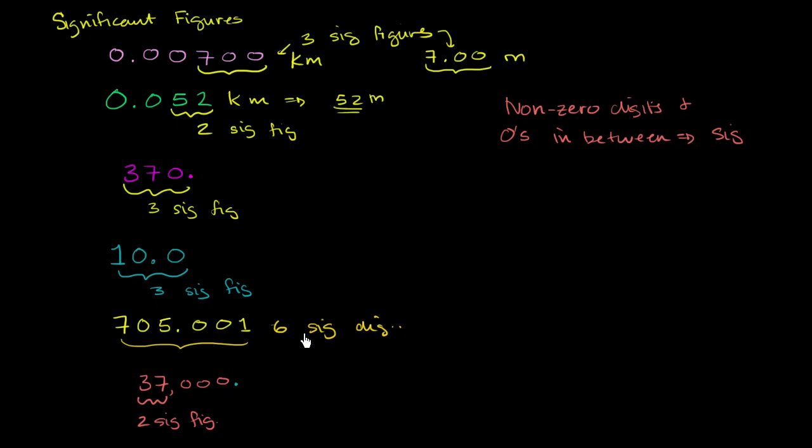Now the zeros that are not in between non-zero digits become a little bit more confusing. So let's just make sure we can rule out some of them. You can always rule out, when you're thinking about significant figures, the leading zeros. And when I talk about leading zeros, I'm talking about the zeros that come before your non-zero digit. So these are leading zeros here, these are leading zeros. There's no leading zeros here, no leading zeros in this one, this one, and this one.